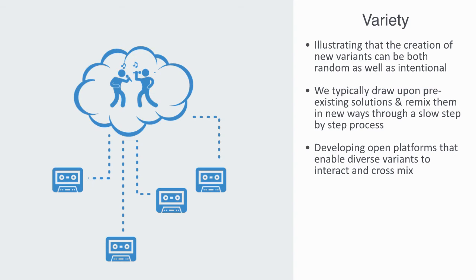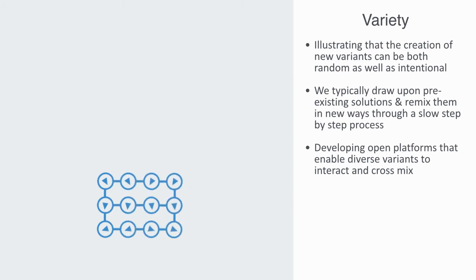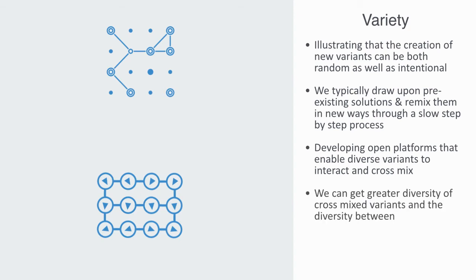Co-working and business incubators are based on the same idea of having an open space for interaction between disparate activities, ideas, and expertise to enable cross-pollination. For this reason, it is important to maintain a stock of diversity within the system for the sake of innovation. But this is not the only factor. We also need to create and foster weak links between disparate domains so that we can get greater diversity of cross-mixed variants, and the diversity between those variants will be less superficial.